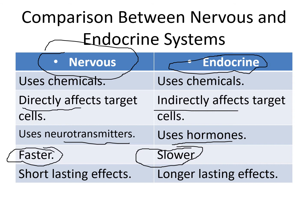Regarding the extent of their effects: even though the nervous system is faster, its effects are short-lasting and must be repeated for a continued response. In the endocrine system, they have much longer-lasting effects. As long as the hormone stays in circulation, it will interact with receptors at target organs. So the endocrine system generally has longer-lasting effects, whereas the nervous system has shorter and quicker effects.